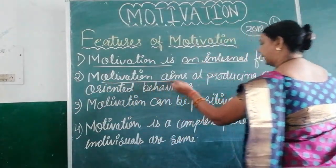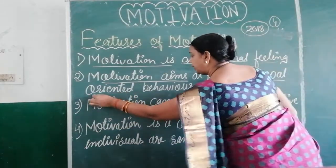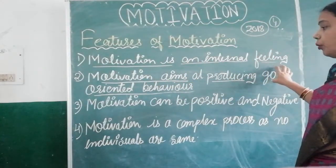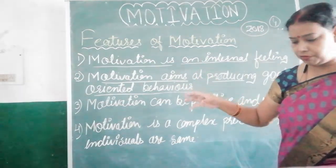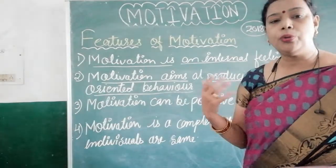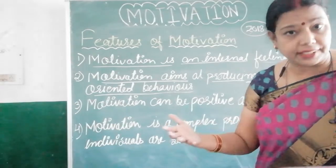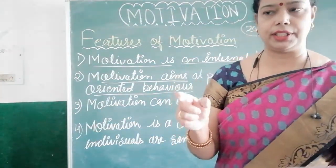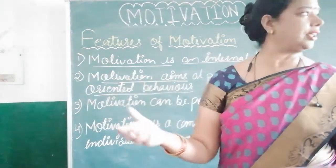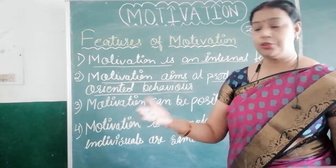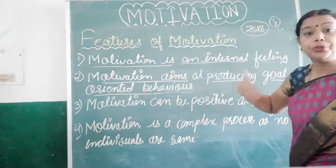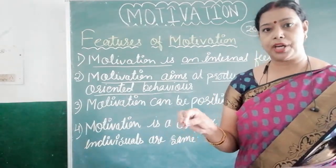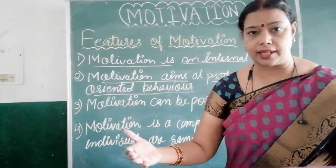Number 2: motivation aims at producing goal-oriented behavior. For example, incentives and bonus — if someone is given a bonus, it produces goal-oriented behavior. If I do more work, my income will increase. This is also a motivation.